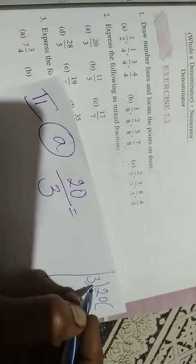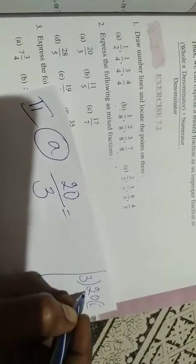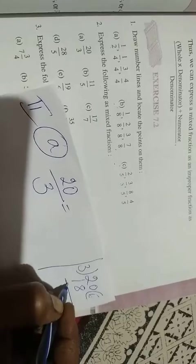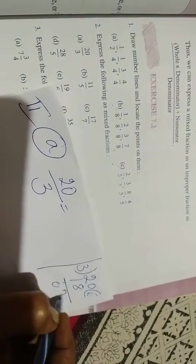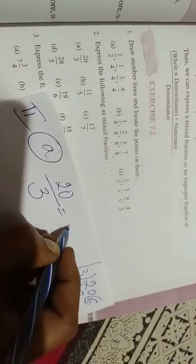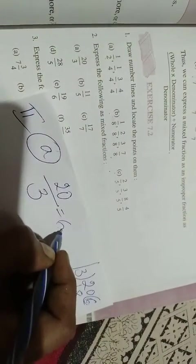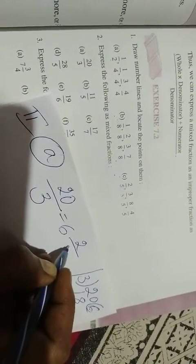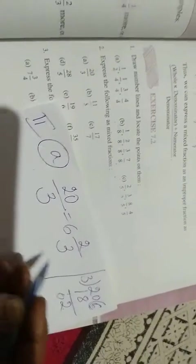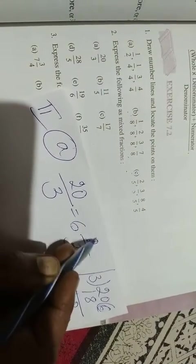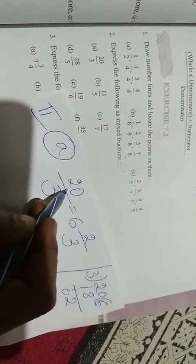Nearest number: 3 times 6 is 18. 20 minus 18 is 2. 6 is the integer. Remainder you have to put in numerator place and denominator as it is: 3. 6 times 3 is 18, 18 plus 2 is 20. Understand?